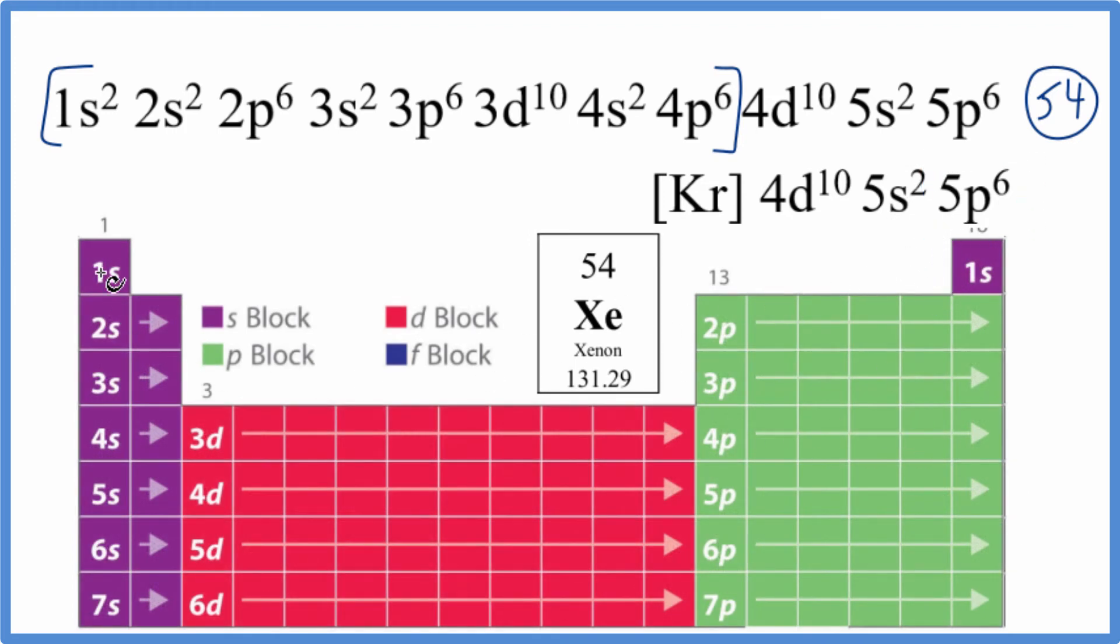So we're looking for something here that ends in 5p⁶. So we start out 1s¹, 1s². That's full. We have 1s². We go to 2s. 2s¹, 2s². That's full. We go to 2p. P holds up to 6: 1, 2, 3, 4, 5, 6. That's full. 3s², 3s², 3p⁶, 4s².